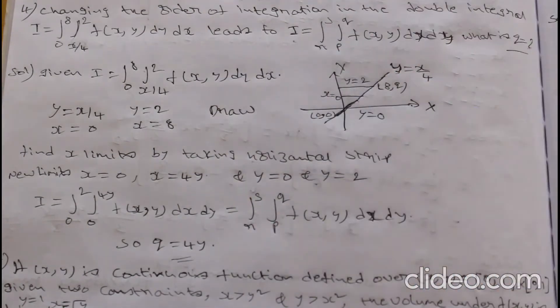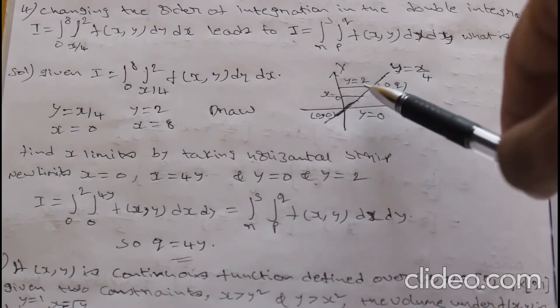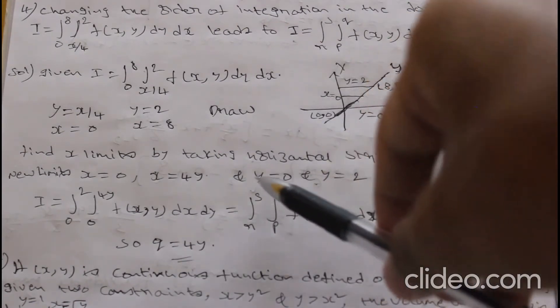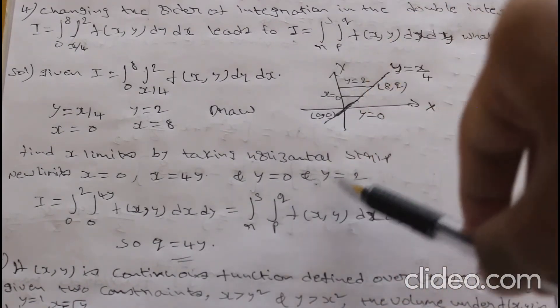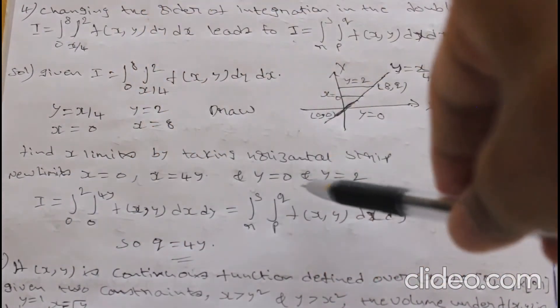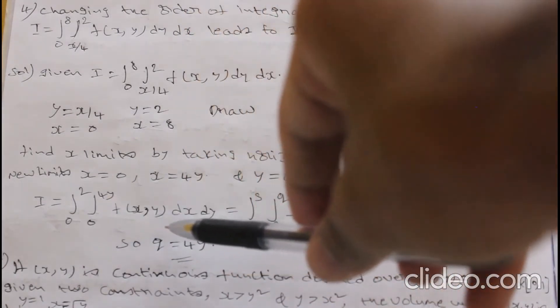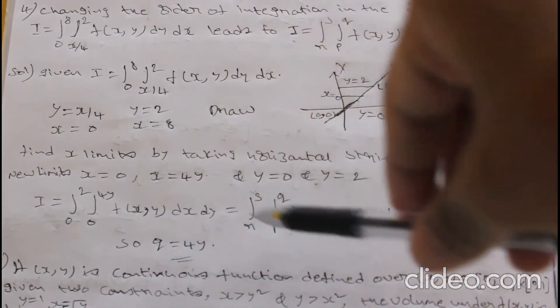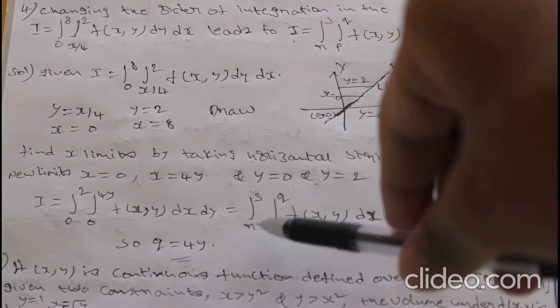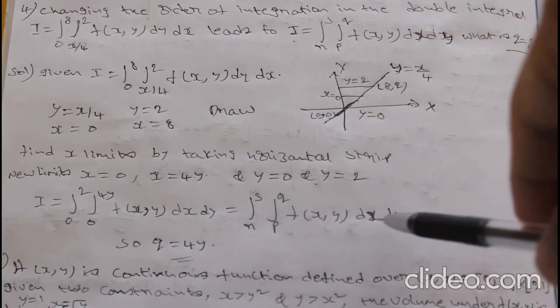For the horizontal strip, y varies from 0 to 2. So the new integral is ∫₀² ∫₀^{4y} f(x,y) dx dy. Therefore q = 4y. That is the answer.